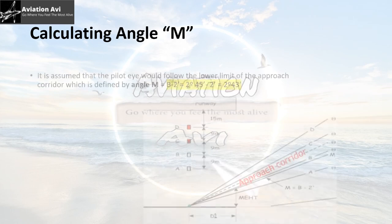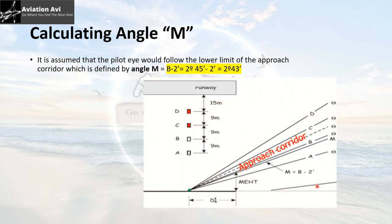The third concept is calculating angle M. In the picture, we can see six angles: Angle A, Angle M, Angle B, Angle C, Angle D, and one between B and C. How these angles are formed will be covered in the next video. For this video, let's assume B is 2 degrees 45 minutes; subtracting 2 minutes gives M as 2 degrees 43 minutes. So if you subtract 2 minutes from the value of B, you get M, which is taken as the lower limit of the approach corridor.